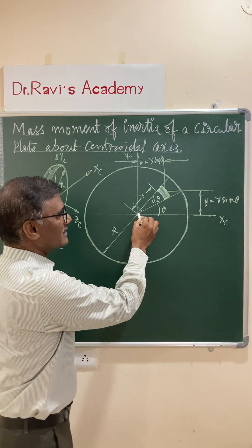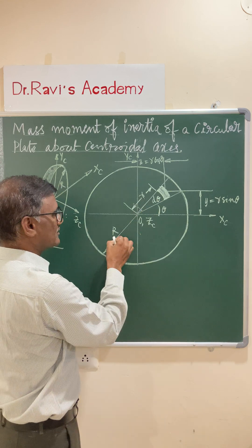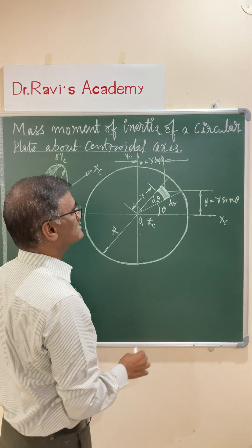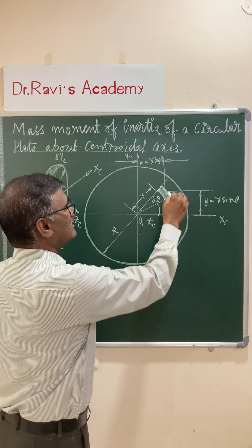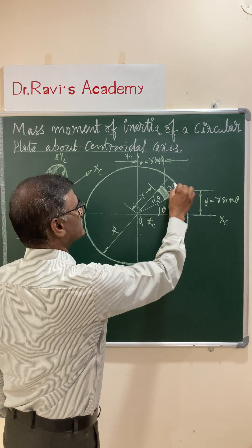Let us select an element at a distance small r from the centre, whereas the radius is capital R and elemental thickness is dr. This elemental thickness is dr and this length becomes r d theta.